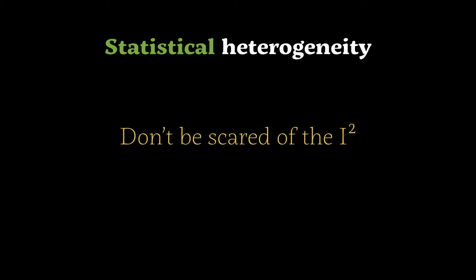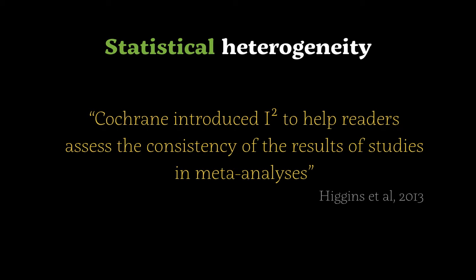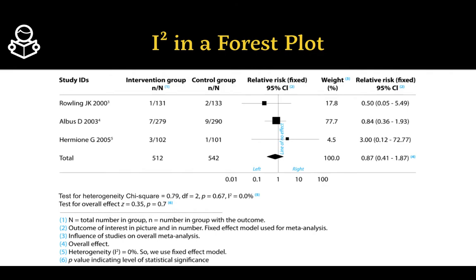I-squared was created to simplify and make it easy to identify the level of heterogeneity when looking at a forest plot or meta-analysis. A high I-squared — typically anything over 50% — indicates high heterogeneity, going up to 100%.